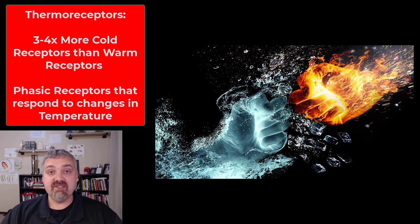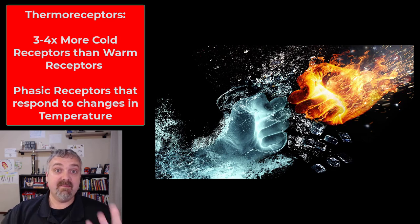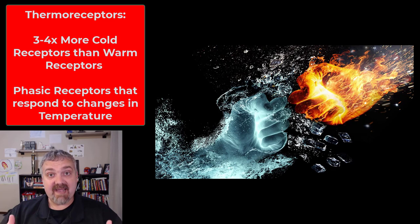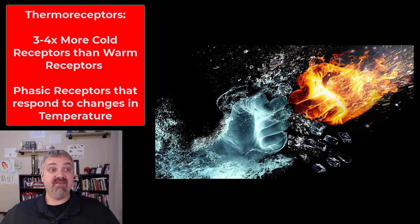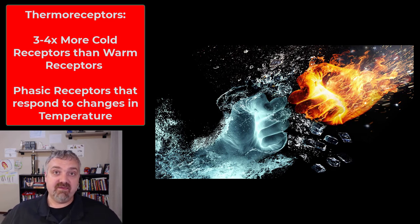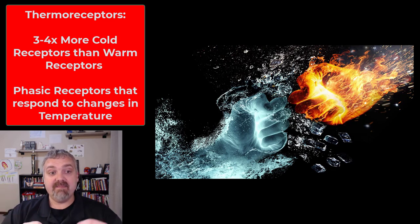Thermoreceptors are phasic receptors — usually off, triggered by changes in temperature, then that initial stimulus fades due to adaptation. If you go outside and it's five degrees colder than you'd like, your brain tells you to warm up and go back inside. But you'll quickly adapt to that temperature unless it's painfully cold or hot. If it's just a little colder than you'd like, wait a few minutes and you'll get used to it — because these are fast-adapting phasic receptors.